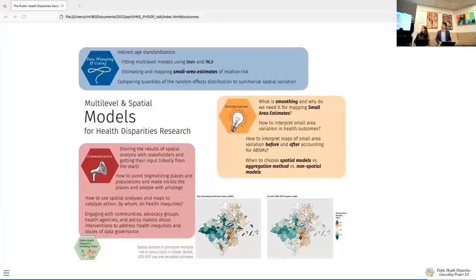Finally, we have multilevel and spatial models, which I described one of, the Bessag-York and Mollier model. And, of course, the data wrangling and coding is a little bit more intensive there. But, again, we described how to map, how to estimate and map small area estimates for interpretation. We talk about what it means to control for additional area based social metrics. How do we interpret the regression coefficients before and after controlling for those measures? And then, in terms of communication, we talk about specifically focusing on the question, how do we use these spatial analyses and maps to catalyze action by whom in order to combat health inequities?